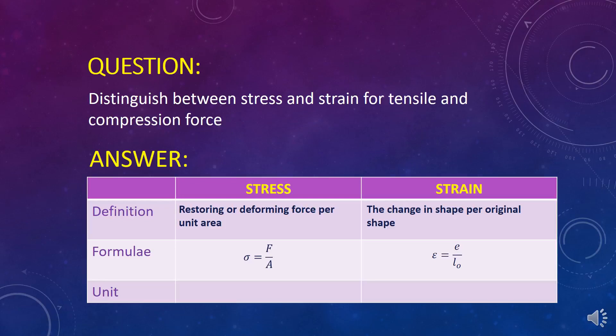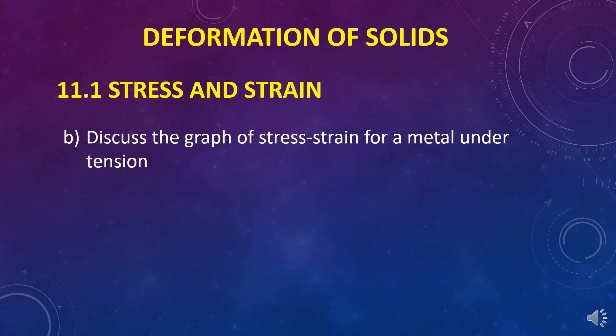Unit for stress is kilogram per meter per second square, Newton per meter square, or Pascal for a metal under tension.